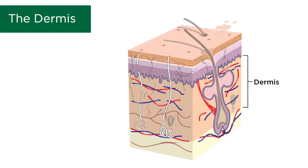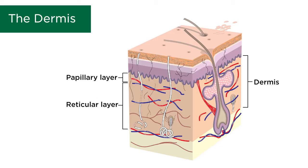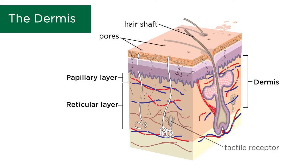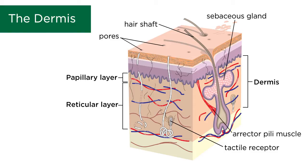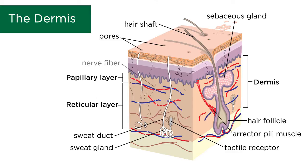Now on to the dermis. The dermis consists of two layers: the papillary and the reticular layer. The reticular layer is thicker and denser than the papillary layer, and it is here where you find many, but not all, of the accessory structures of the integument. These include hair shafts, pores, tactile receptors, sebaceous glands, erector pili muscle, sweat glands and ducts, hair follicles, and nerve fibers.